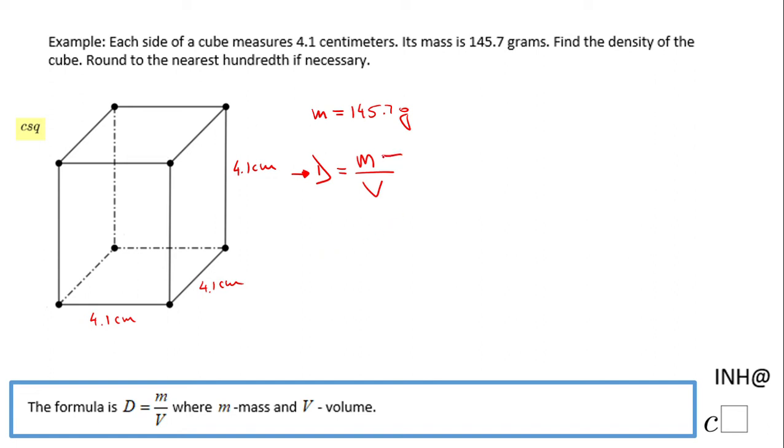As you notice here, we know the mass. The only thing we have to find is the volume. How do you find the volume of this cube? The volume of a cube, or any rectangular prism, is area of the base times the height. The area of the base here is 4.1 times 4.1.